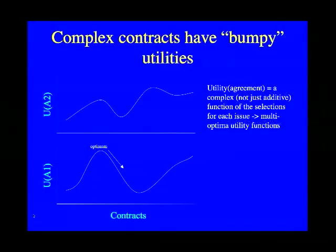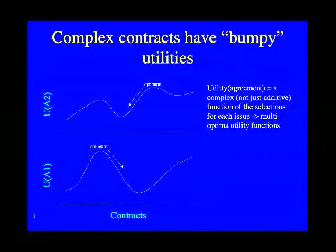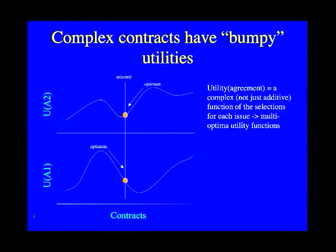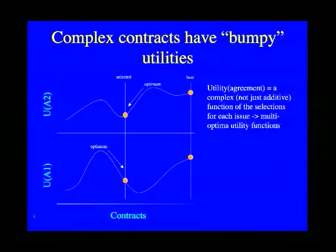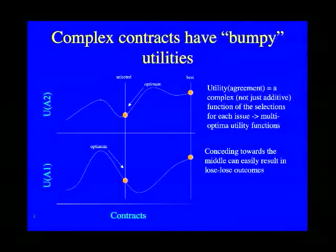Imagine applying a proposal exchange process to this kind of bumpy utility function. Agent 1 starts from its optimum and concedes as slowly as possible, and the other agent does the same, both conceding towards each other. If they continue that process, they will end up with a contract that is relatively poor for both of them. Had they not started from their respective optima and not conceded towards each other, they could have reached a contract that is actually much better for both. Conceding towards the middle can easily result in lose-lose outcomes with complex contracts.